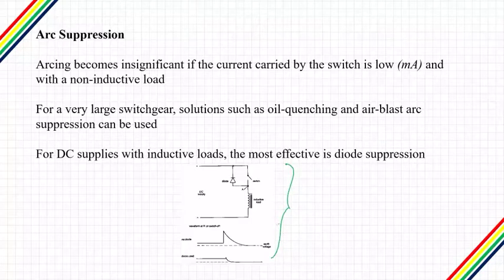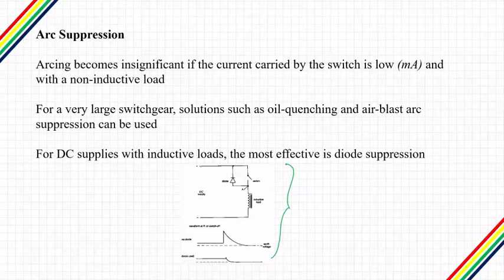The sudden drop of current through the inductive load will induce a voltage that is always in the reverse direction to the applied voltage across the switch, as described by Faraday's law of electromagnetic induction. By using a diode connected so as to conduct for this polarity of voltage — the diode is on reverse bias with respect to the DC supply, but it is conductive with the polarity of voltage that the inductive load will be inducing — so it will conduct current.